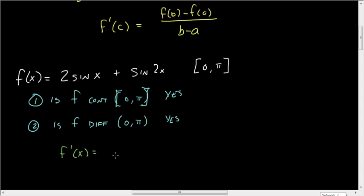Now we're looking at the derivative. The derivative of 2 sin x is 2 cos x. The derivative of sin 2x is cos 2x times the derivative of what's inside, which is 2. So f'(x) = 2 cos x + 2 cos 2x.